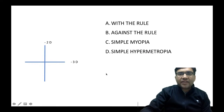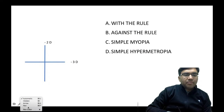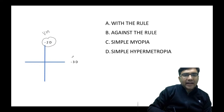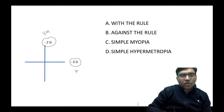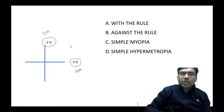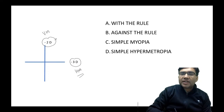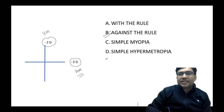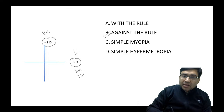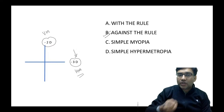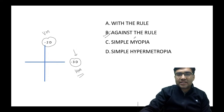Another example: minus 2 diopter in the vertical meridian and minus 3 diopter in the horizontal meridian. In this case, the horizontal meridian is more curved than the vertical meridian, so this is against-the-rule astigmatism. Remember, whenever there is more myopia in one axis, that axis is more curved.